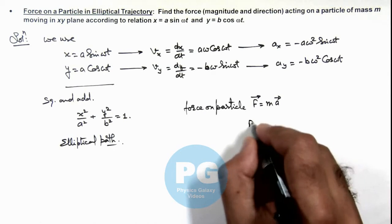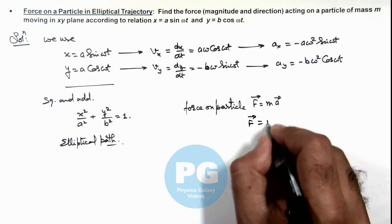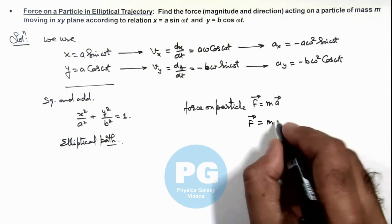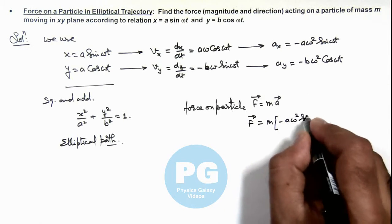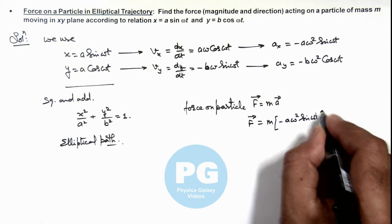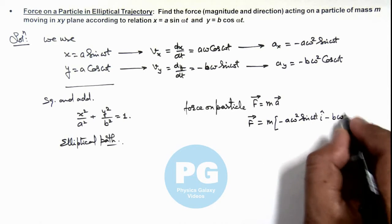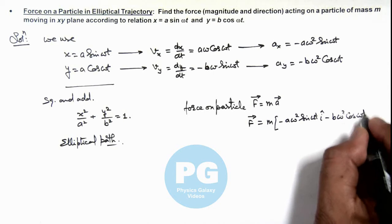So here this force vector we can write as m and a vector is given by these components, so this is minus a omega square sine omega t i cap, minus b omega square cosine omega t j cap.